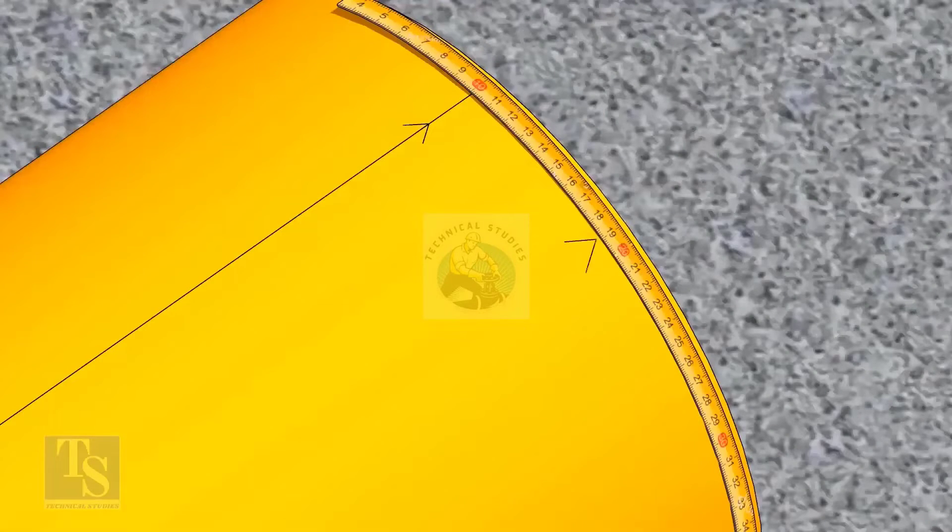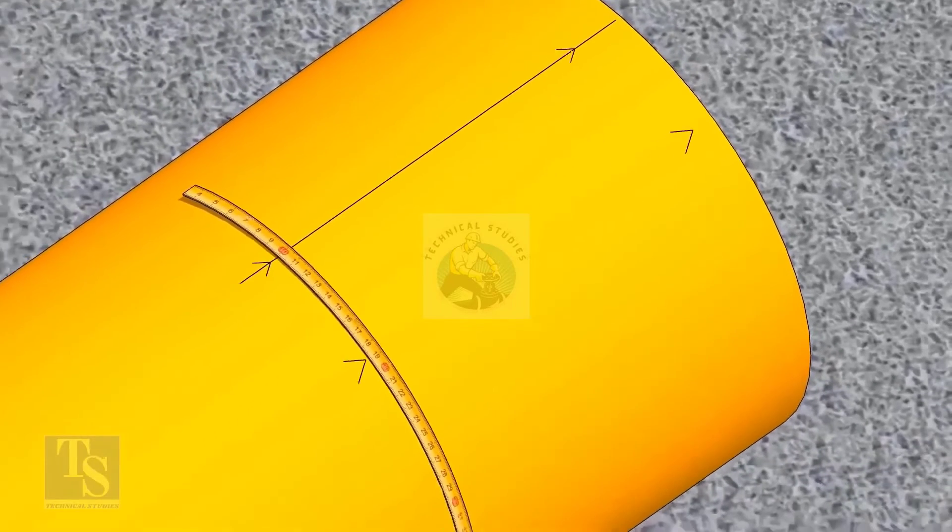Since we are rotating the flange 25 degrees anticlockwise, mark 88.5mm anticlockwise on the pipe as shown.